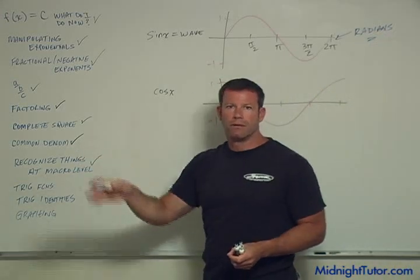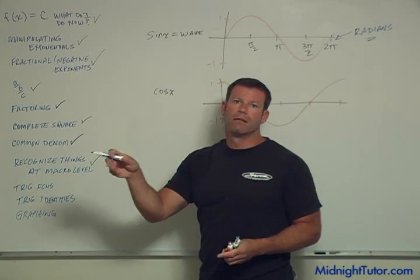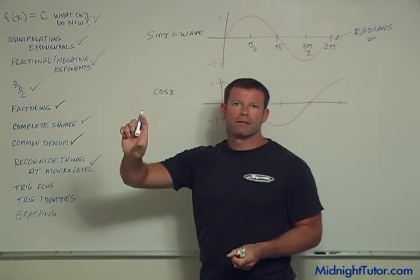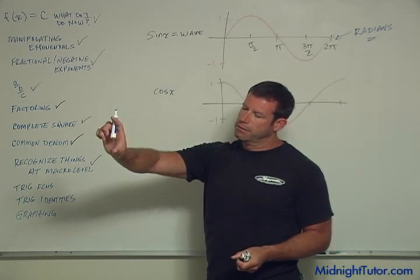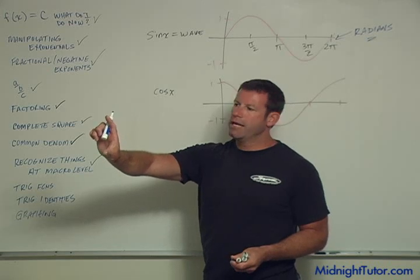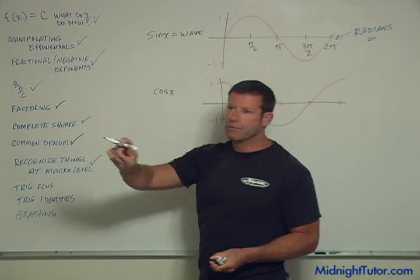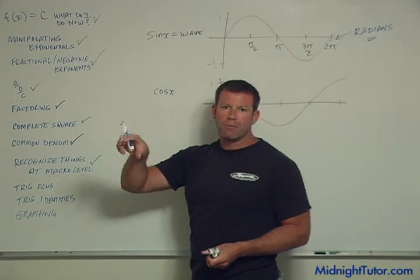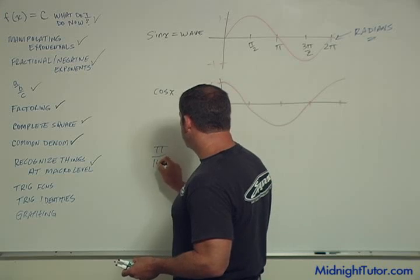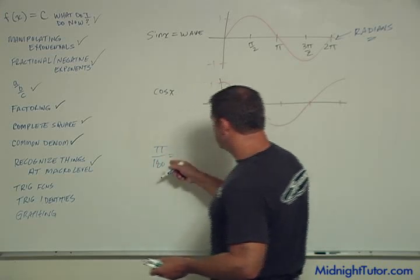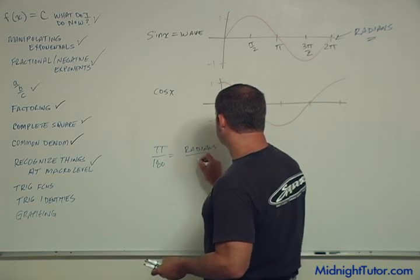Well, if you think about a circle, what's the circumference of a circle? 2 pi times the radius. A radian is the amount of arc length that's described by an angle of size 1 radian, right? So there's 2 pi divided by 1. So I always remember pi over 180, right, is radians to degrees.